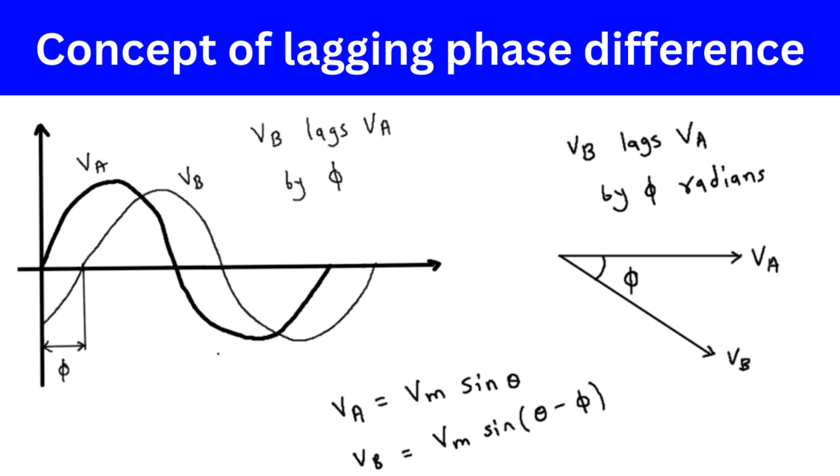Specifically, if voltage waveform Vb lags voltage waveform Va by an angle Φ in radians, then we say that Vb has a lagging phase difference with respect to Va.